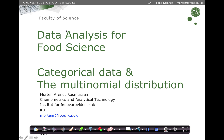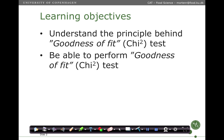In this video we are going to go through categorical data and the multinomial distribution. In particular, we are going to go through how the chi-square test is performed, both on Blackboard and how it's done in R. The learning objective is to understand the principle behind what we call goodness of fit test or the chi-square test, and be able to perform goodness of fit chi-square tests.